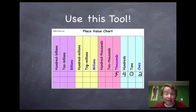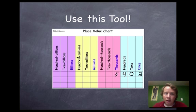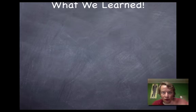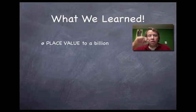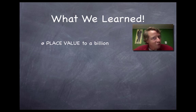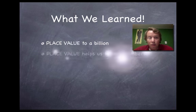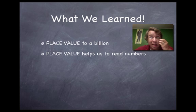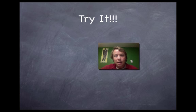You're going to have to memorize these names and the order they come in. If you remember the pattern — ones, tens, hundreds, thousands, ten-thousands, hundred-thousands, millions, ten-millions, hundred-millions, billions, ten-billions, hundred-billions — that pattern will help you memorize. So what did we learn today? We learned place values out to the billions, that place value helps us read numbers, and the next lesson we'll start reading and writing these numbers.